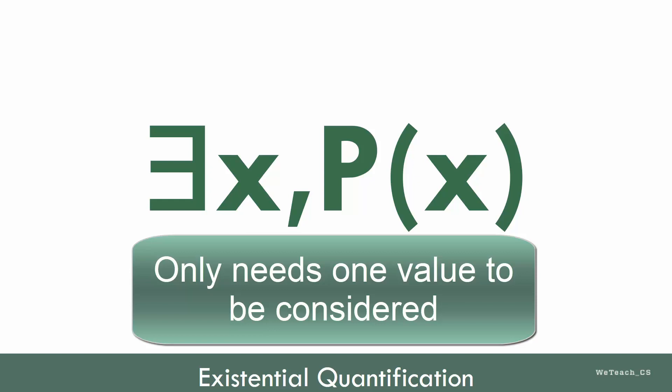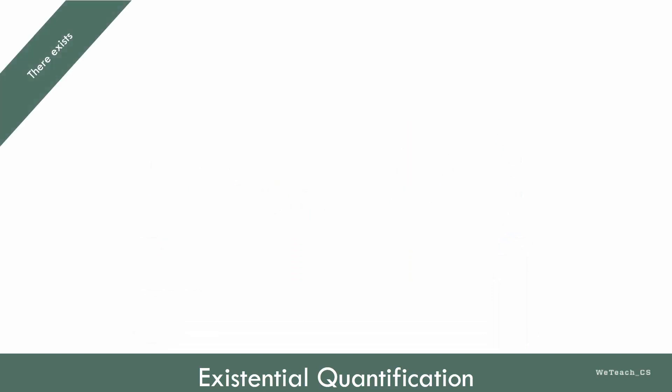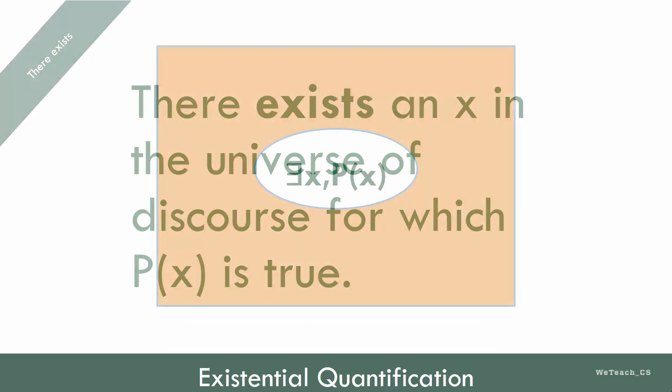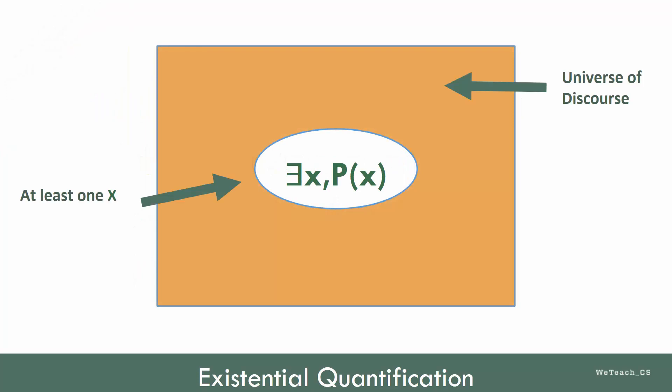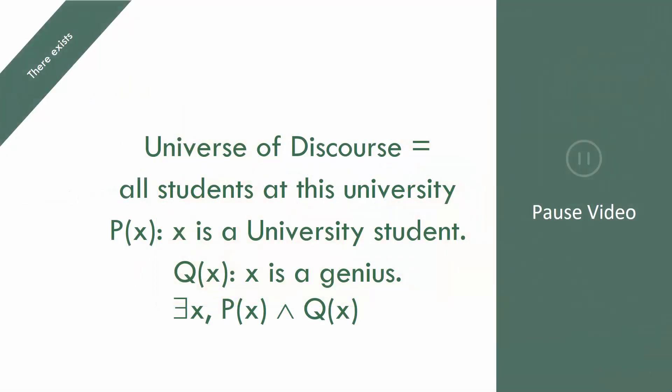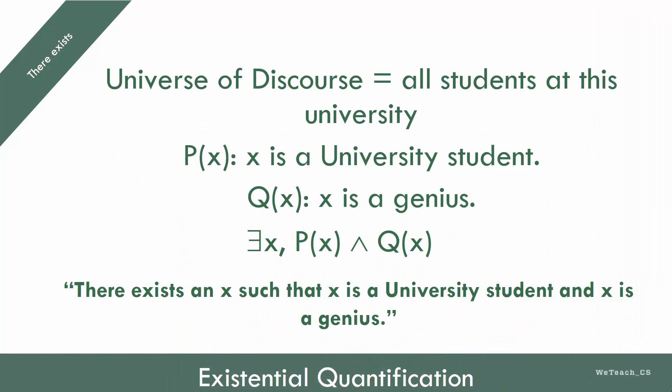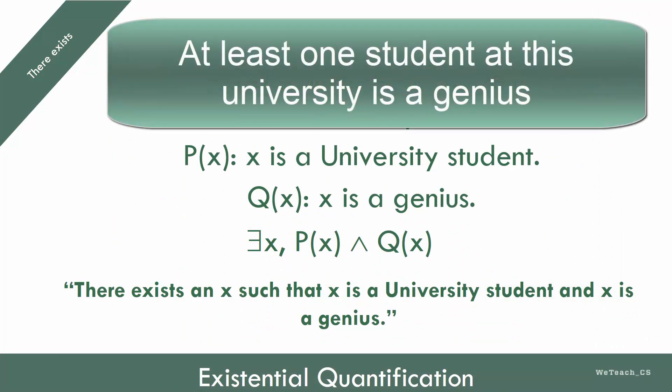This existential quantification of a predicate, p of x, can be translated as, There exists an x in the universe of discourse such that p of x is true. Pause the video, study this example for a moment, and work out the translation. What does it say in plain English? Okay, let's see how you did. You could also say it even in simpler terms, like, At least one student at this university is a genius.